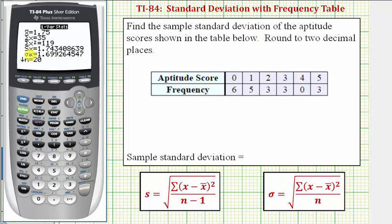The sample standard deviation is Sx, which would be approximately 1.74. Sigma X is the population standard deviation, which would be approximately 1.70. This question asks for the sample standard deviation, so our answer is approximately 1.74.